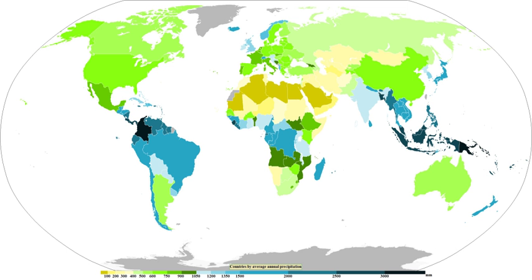Snow crystals form when tiny supercooled cloud droplets freeze. Once a droplet has frozen, it grows in the supersaturated environment. Because water droplets are more numerous than ice crystals, the crystals are able to grow to hundreds of micrometers in size at the expense of the water droplets — a process known as the Wegener-Bergeron-Findeisen process. The corresponding depletion of water vapor causes the droplets to evaporate, meaning the ice crystals grow at the droplets' expense. These large crystals are efficient sources of precipitation, falling through the atmosphere and colliding to form aggregates called snowflakes.